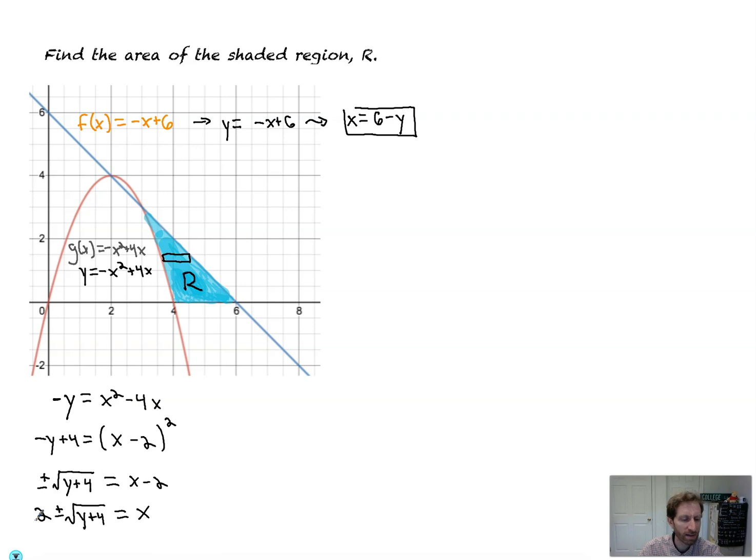So x equals 2 plus or minus the square root of y plus 4. That's this curve. It's still the same curve. So it's a little bit of a tougher problem.